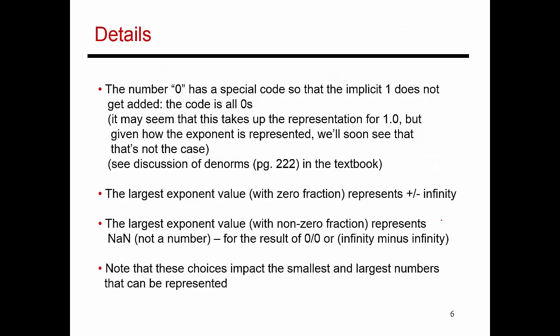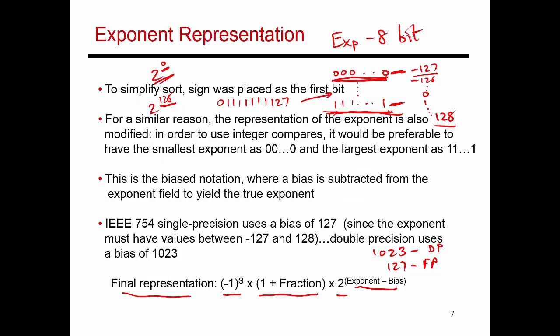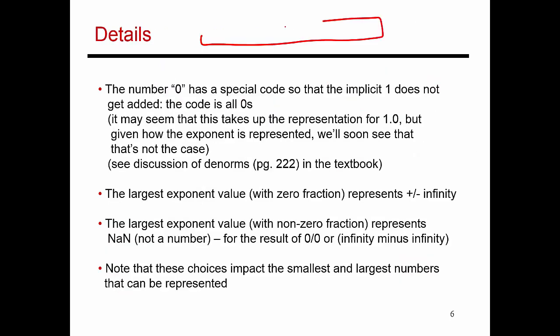Now let's look at a few more details. If you're always going to add an implicit 1 — so the representation is 1 plus the fraction — and this is always going to be a positive number, then how do I represent the number 0? For 0, you need a special case. If you look at the 32-bit register and all the bits are 0s, that's a special case that represents the number 0 itself, and you would not add the implicit 1 in that case.